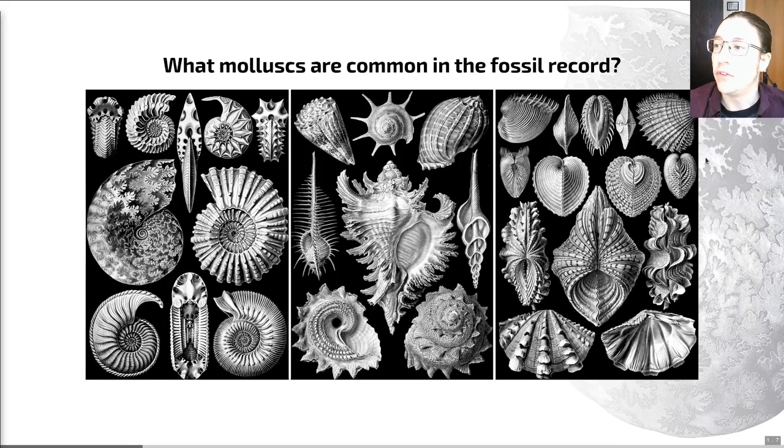The bivalves, which you can see on the right here, are our final group. These are named after their two shells within which the animal lives. Those shells are characterized by a huge variety of shapes, dentitions - that's the name for the teeth that join them together - and muscle scars. We'll learn what those are in the next video. They're adapted for a wide range of life strategies in marine and some freshwater environments. If you think of mussels, as in the food that we eat, these are an example of a bivalve.